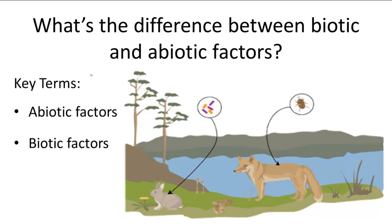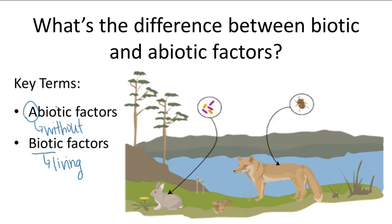Both abiotic and biotic factors are crucial in an ecosystem. Biotic means living — think bio, biology, life. Abiotic: 'a' means without, like asymmetry meaning without symmetry, so abiotic would be without life, or non-living.